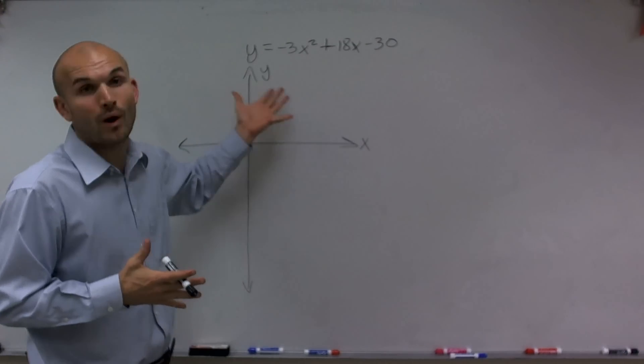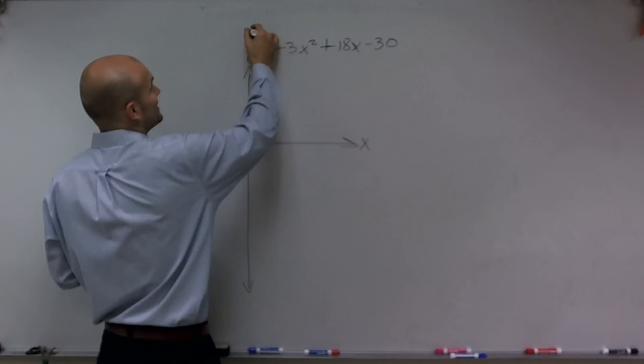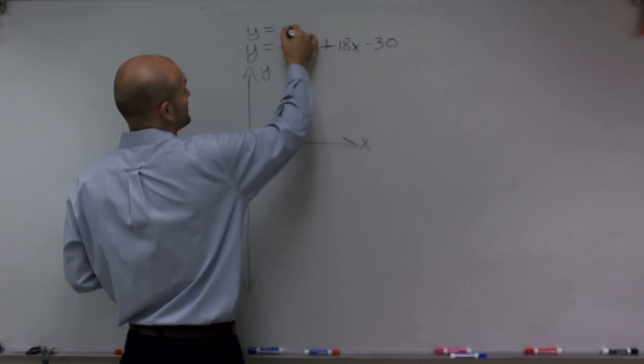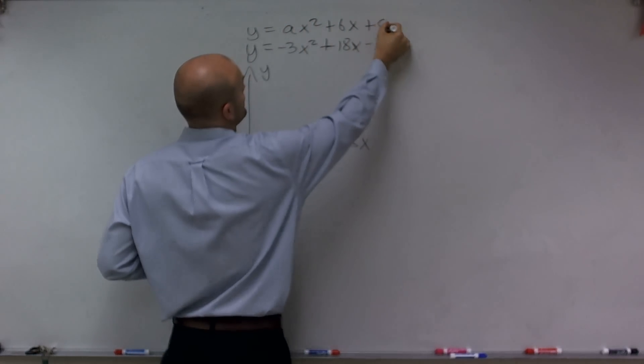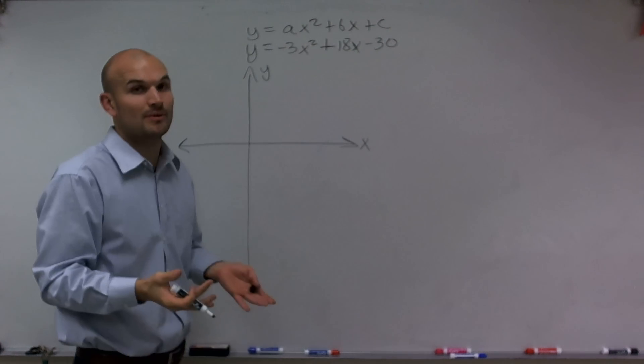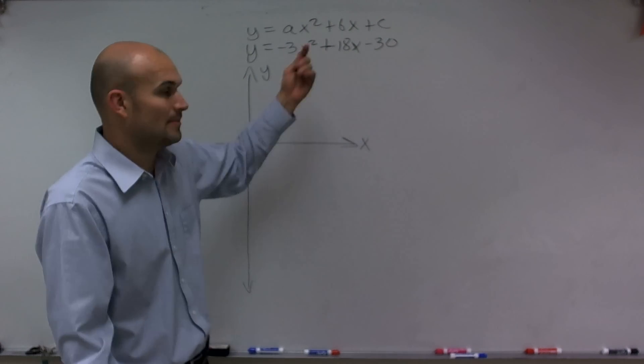So remember, this is a quadratic equation, meaning it can be written in the form y equals ax squared plus bx plus c, where a, b, and c are real numbers and also your coefficients and your constant.